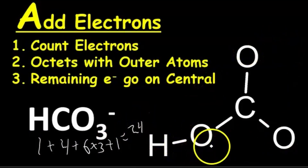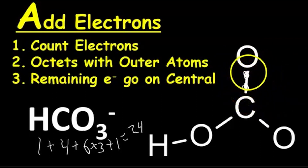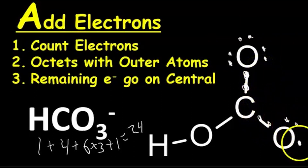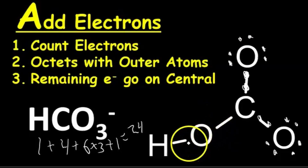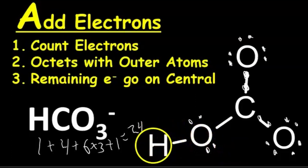We add those electrons to our structure starting with the outer atoms to make octets. This oxygen has two electrons associated with it from the bond; to make an octet we need eight, so we add six more. Now this oxygen has a complete octet. We go to the next oxygen and add six more to complete its octet. We do the same for the oxygen bonded to carbon — it already has four electrons from two bonds, so we add four more to complete its octet. We've now used all 24 electrons. We never add electrons to hydrogen because it can't support more.